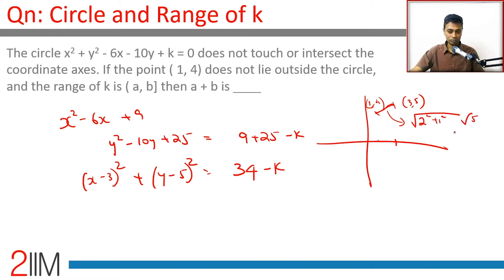The radius of this circle is less than or equal to √5. Sorry, the radius of this circle should be greater than or equal to √5, because (1, 4) is either inside the circle or on the circle.